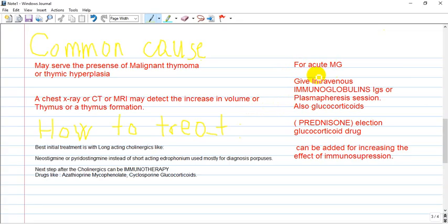How to treat the disease? Best initial treatment is long-acting cholinergics. Neostigmine and pyridostigmine are very good drugs for this disease, unlike edrophonium which has very short duration of action.